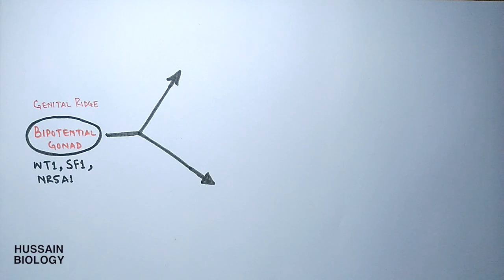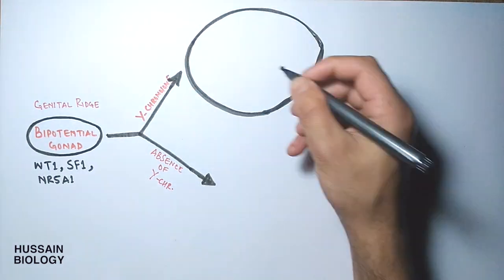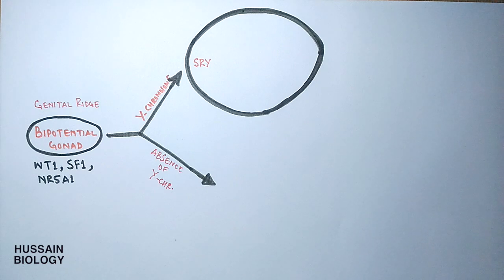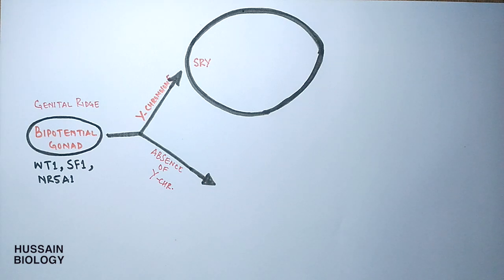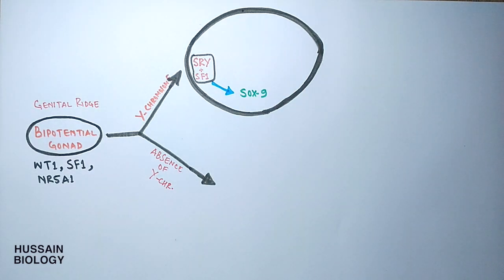The bipotential gonad develops in two ways depending on the presence or absence of the Y chromosome. When the Y chromosome is present, it expresses the SRY gene — the testis determining factor (TDF). TDF is a member of the SOX gene family (SRY-like box genes) and encodes a transcription factor. This TDF works together with SF1 protein encoded by the SF1 gene.